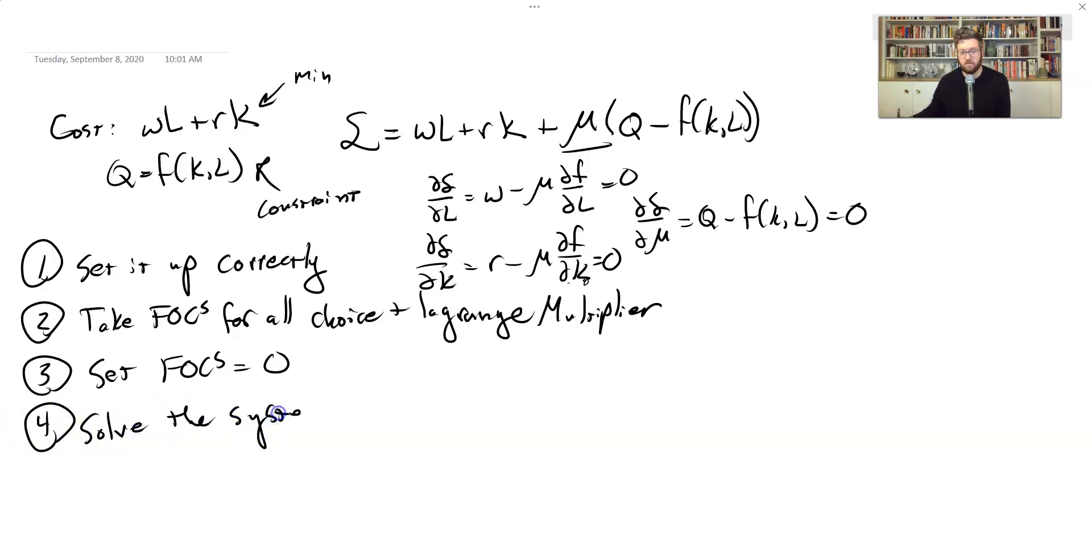So remember, when we solve the system, we're going to end up with L, that was one of our choice variables. And it's going to be a function of the exogenous variables that we didn't choose. We didn't choose the wage rate and we didn't choose R. And those are going to be our exogenous variables. We're going to end up with another function for the demand for capital. And that's going to be a function of the same two exogenous variables. And then technically, we also end up with a function for the Lagrange multiplier, a function of these guys too.